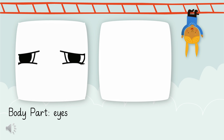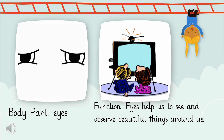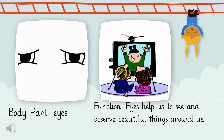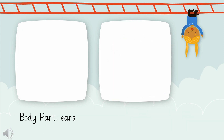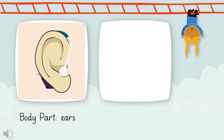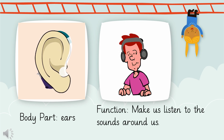First, what do we do with our eyes? Eyes help us to see and observe beautiful things around us. We can watch television and other things with our eyes too. We should not watch television or any screen closely with our eyes. Do you know the function of ears? We hear different sounds and voices of people around us with our two ears.